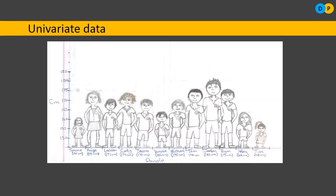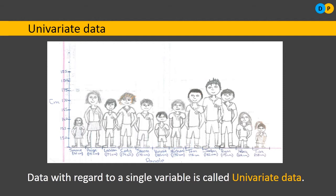Data with regard to a single variable is called univariate data. As you can notice in the diagram, there are students measuring their heights. If we talk only about their height — considering only a single variable — then that is referred to as univariate data.